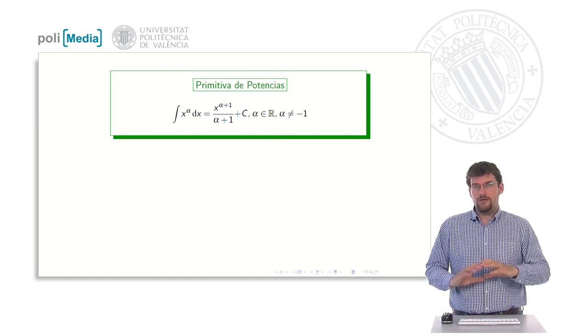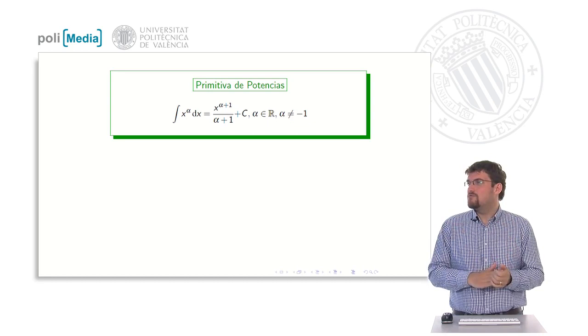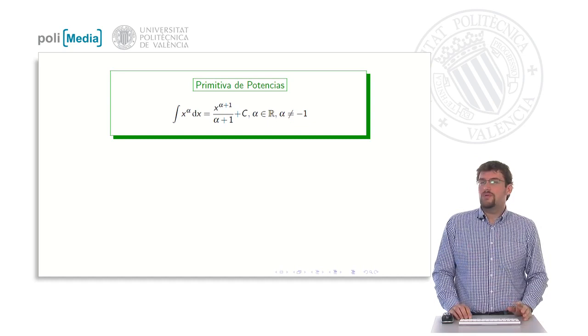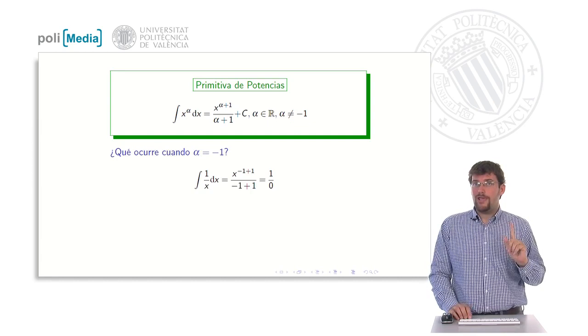Well, so the antiderivatives of the powers, we can then state an immediate antiderivative, like this one we have on the screen right now. This would be that x raised to alpha will basically be x raised to alpha plus 1 divided by alpha plus 1 plus the constant. And this will be useful for any alpha, a real number, as long as this one is not minus 1.